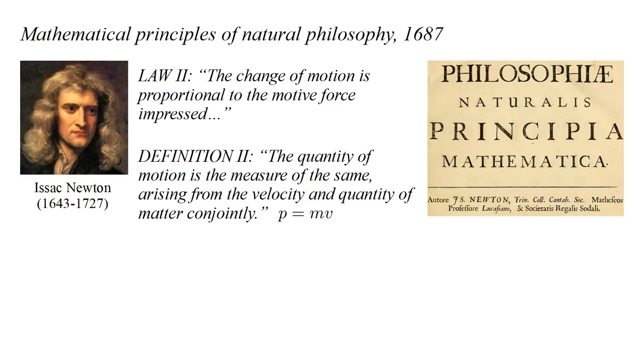Newton uses the term motion for what we now call momentum. And by change of motion, he means what we now refer to as rate of change of momentum. So we write Newton's second law as force F equals rate of change of momentum, mv. Assuming mass doesn't change with time, we factor this out to get m times rate of change of velocity, which is mass times acceleration, F equals ma.